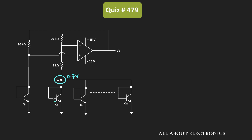For transistors Q2 to Q32, the collector voltage VC is equal to 0.7V, and the same voltage will also appear at the base terminals. So we can say that VB2 = VB3 = VB32 = 0.7V. That means for all these transistors, the base emitter voltage VBE is equal to 0.7V.